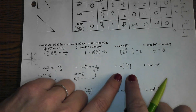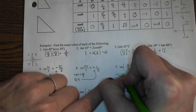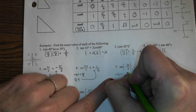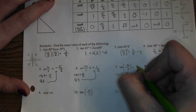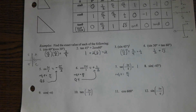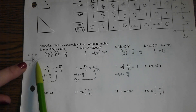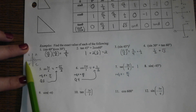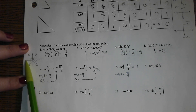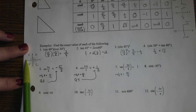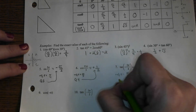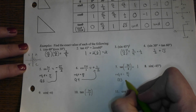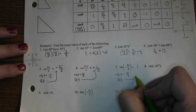For tan(−3π/4): reference angle is π/4, and tan(π/4) = 1. Going backwards (negative direction): negative 4π/4 is 180°, so negative 3π/4 is just before that — third quadrant. Tangent is positive in Q3, so the answer is positive 1.